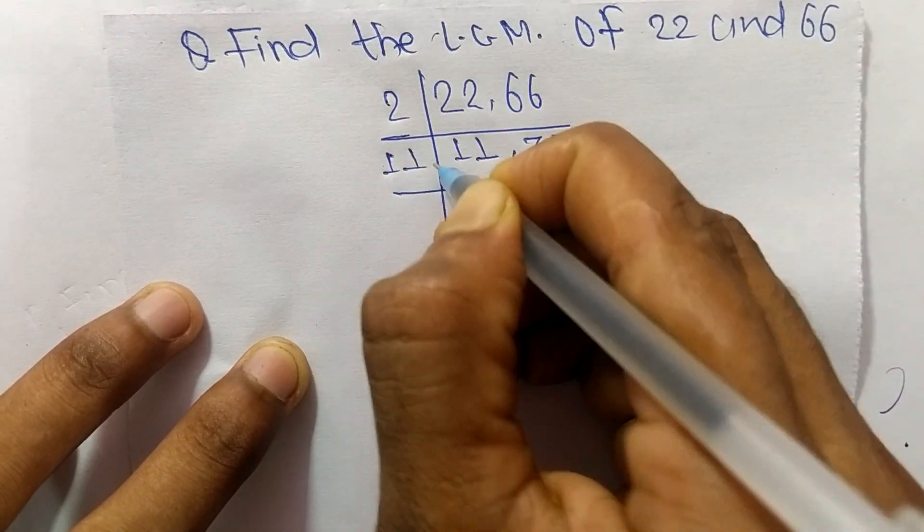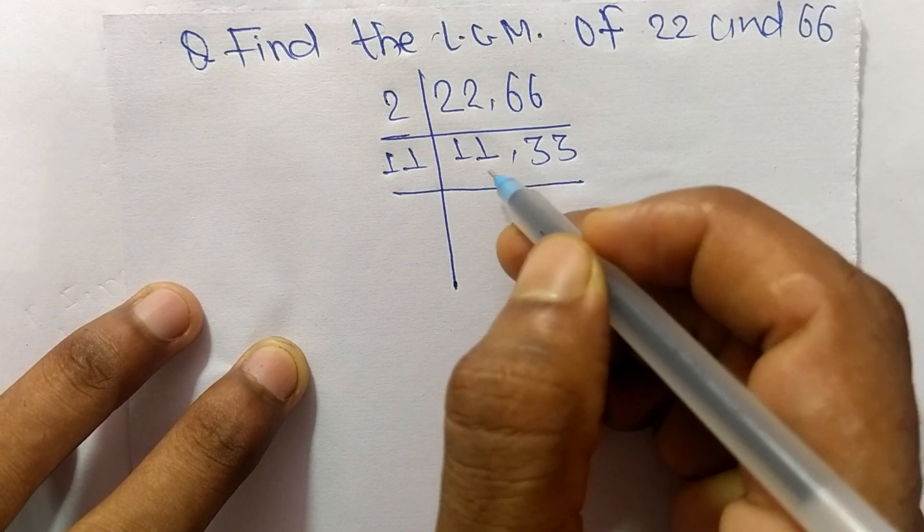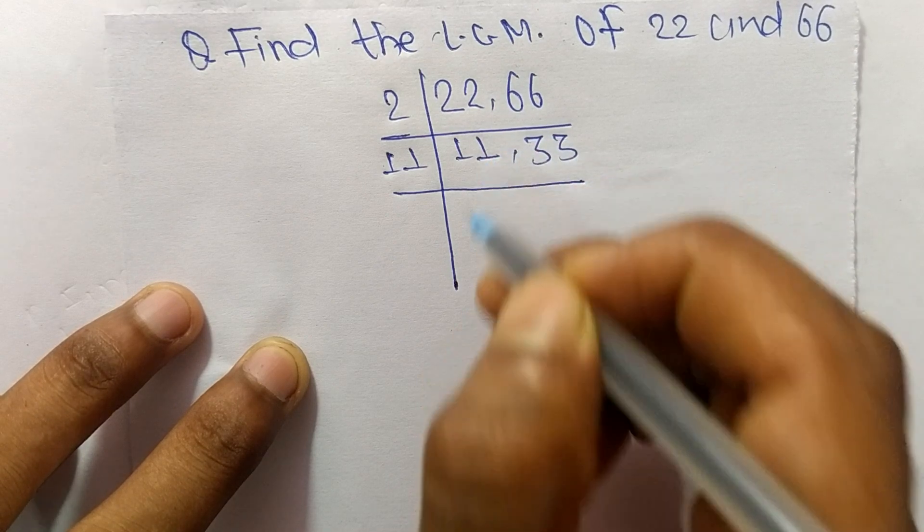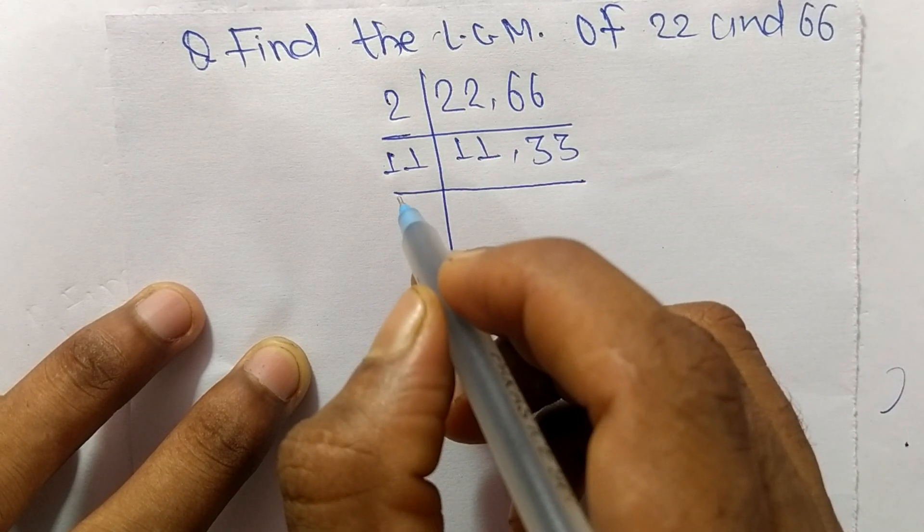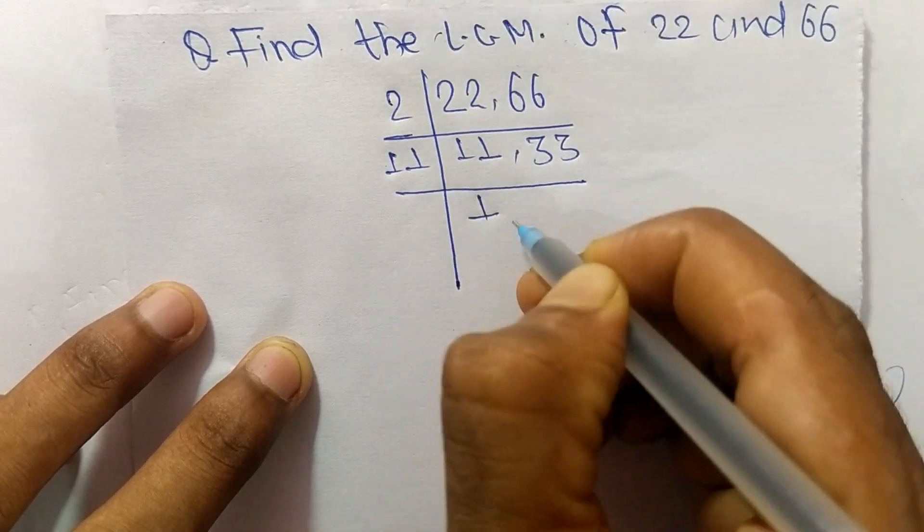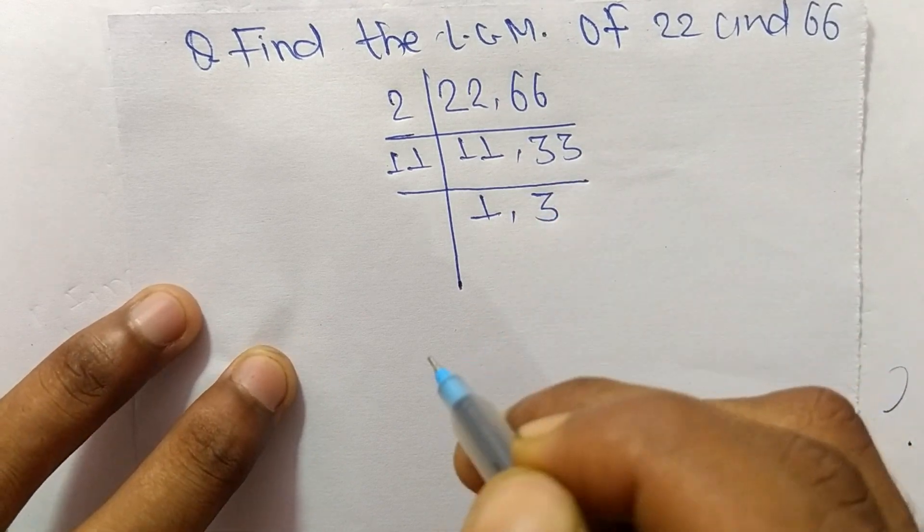Now we have 11 and 33. If we try 3, it can exactly divide 33 but can't exactly divide 11. So we take the number 11, which can divide both numbers. 11 times 1 equals 11, and 11 times 3 equals 33.